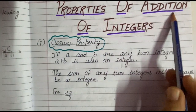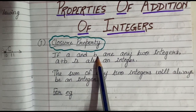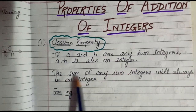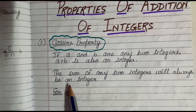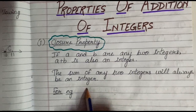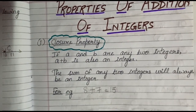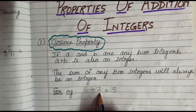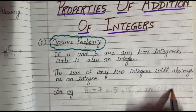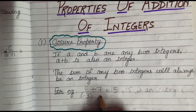Properties of addition of integers — the first is the closure property. It says that if A and B are any two integers, then A plus B is also an integer, or the sum of any two integers will always be an integer. For example, suppose we have two integers 8 and 7. On adding them we will get 15, where 8 is an integer, 7 is an integer, and 15 is also an integer.